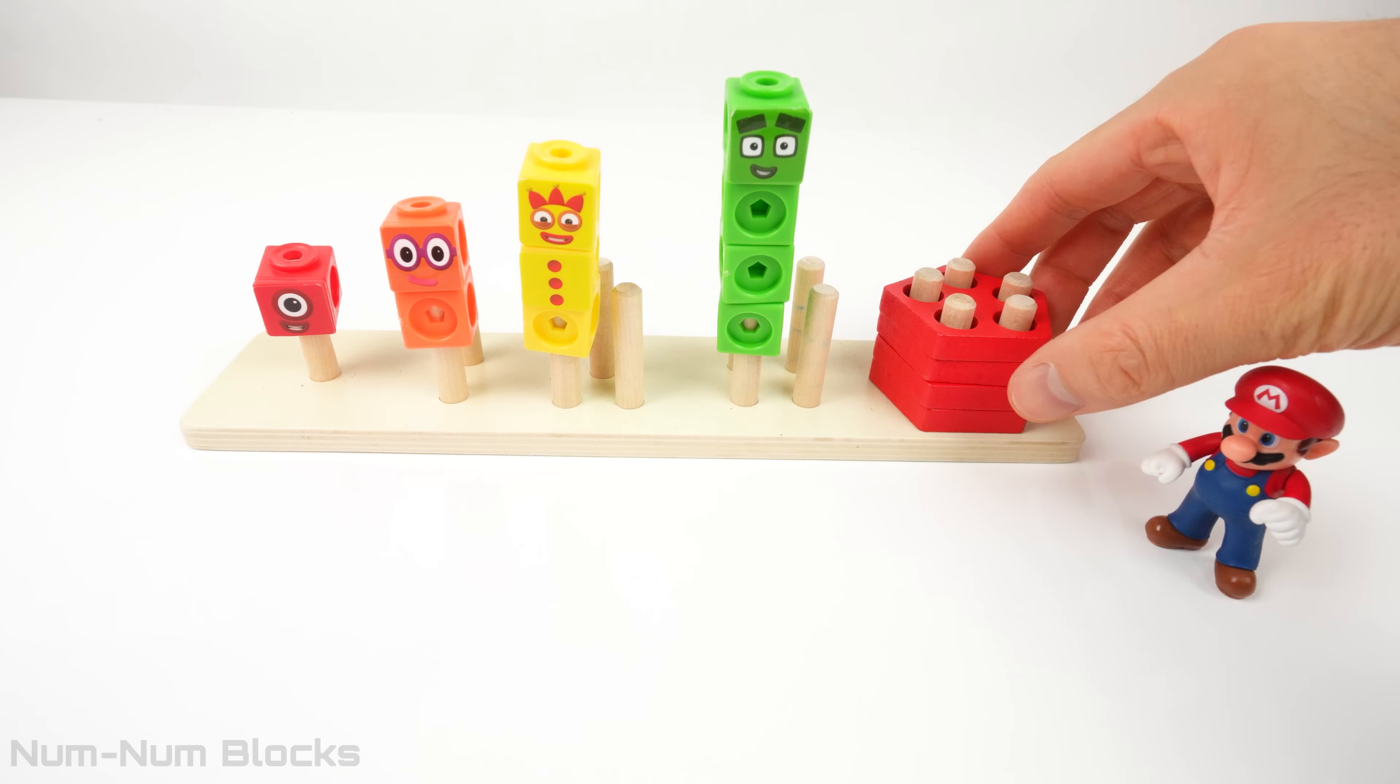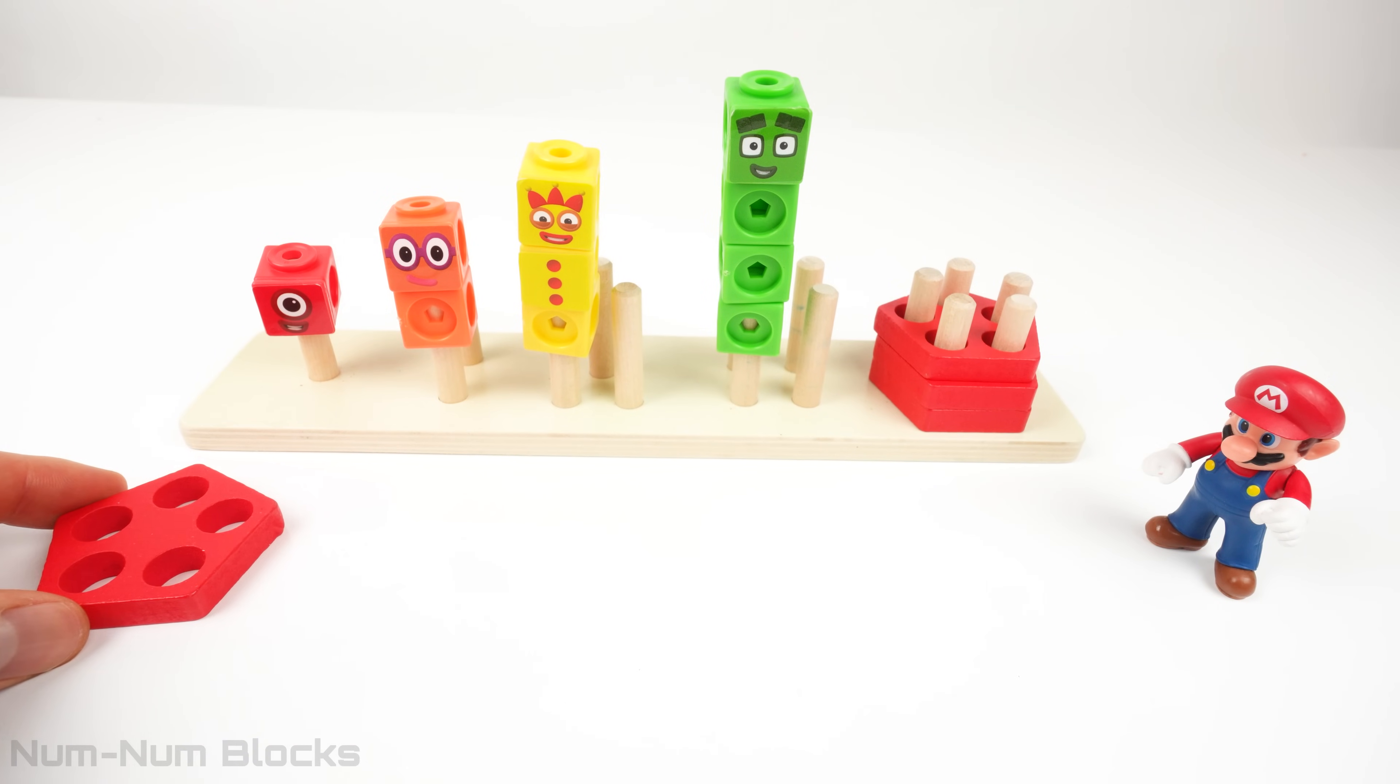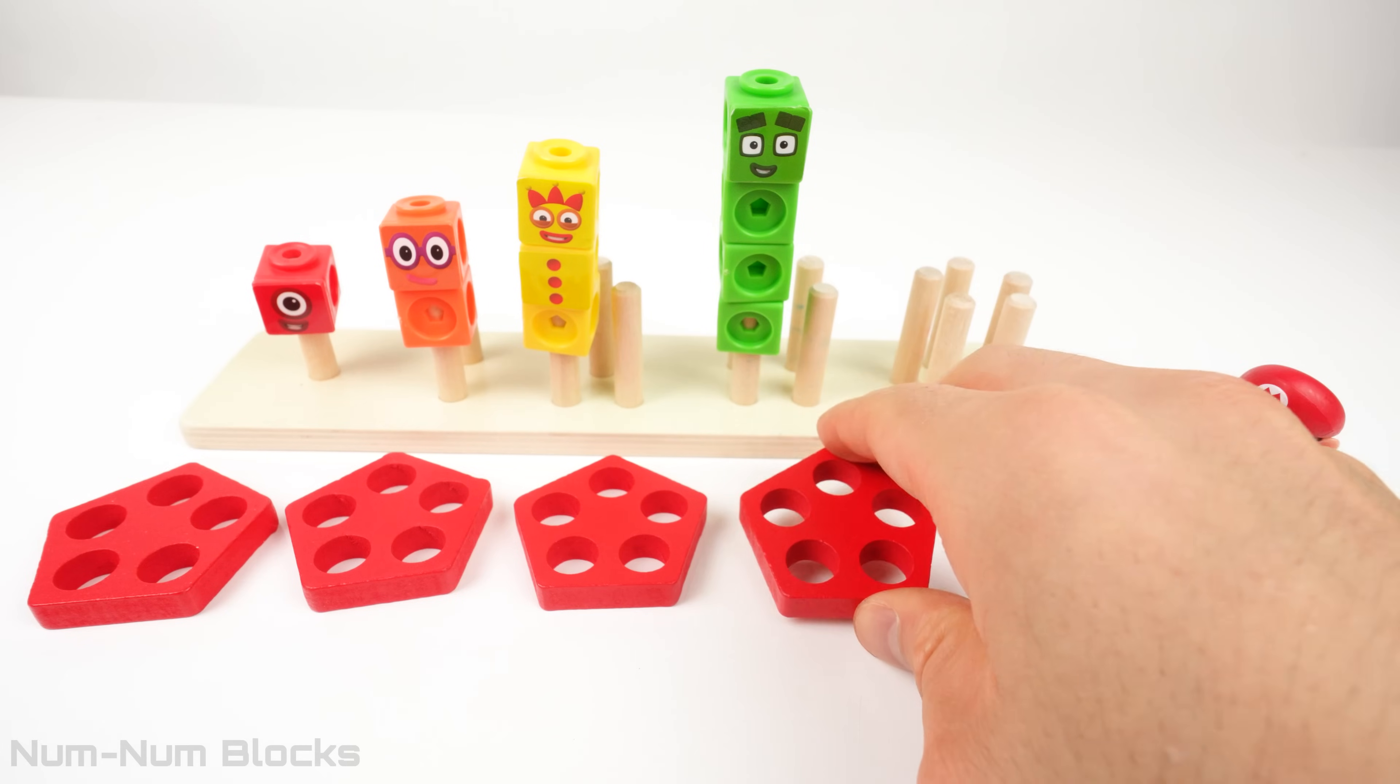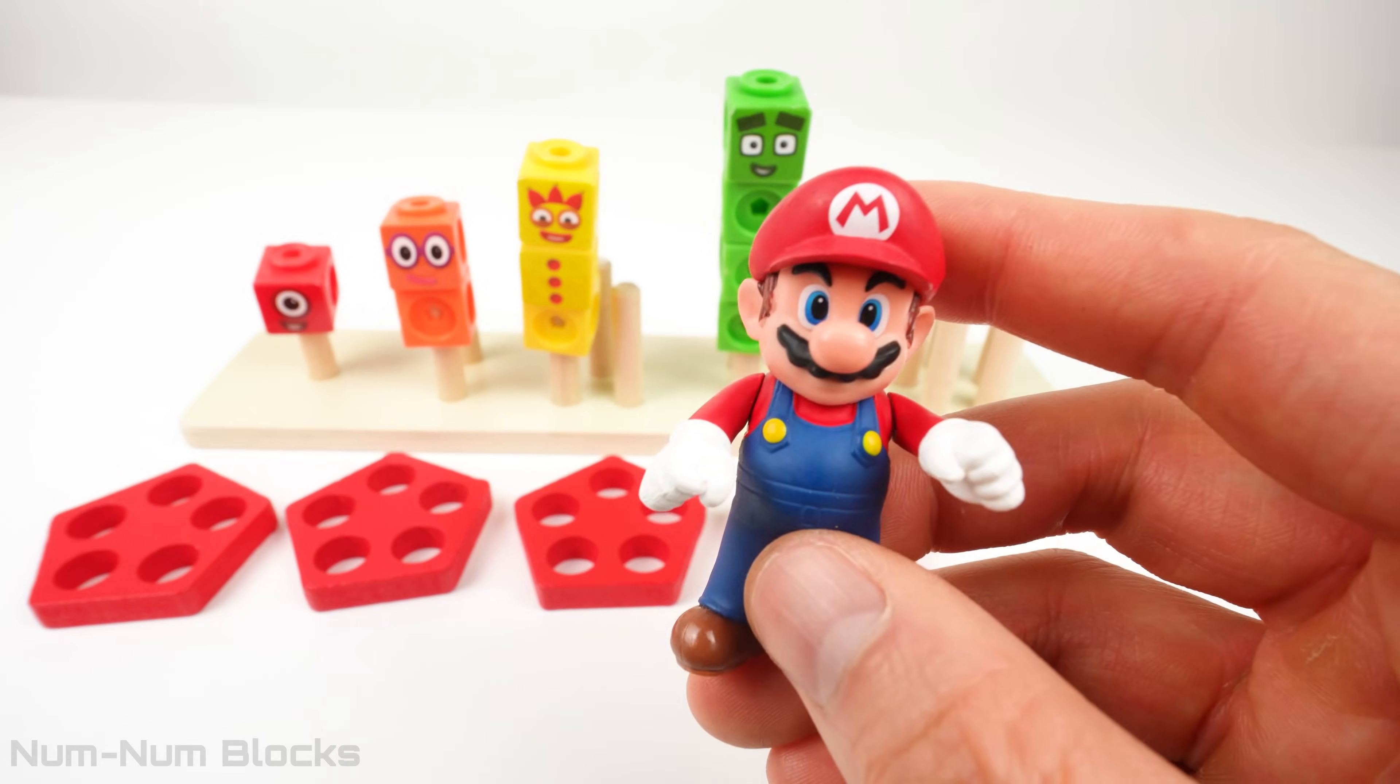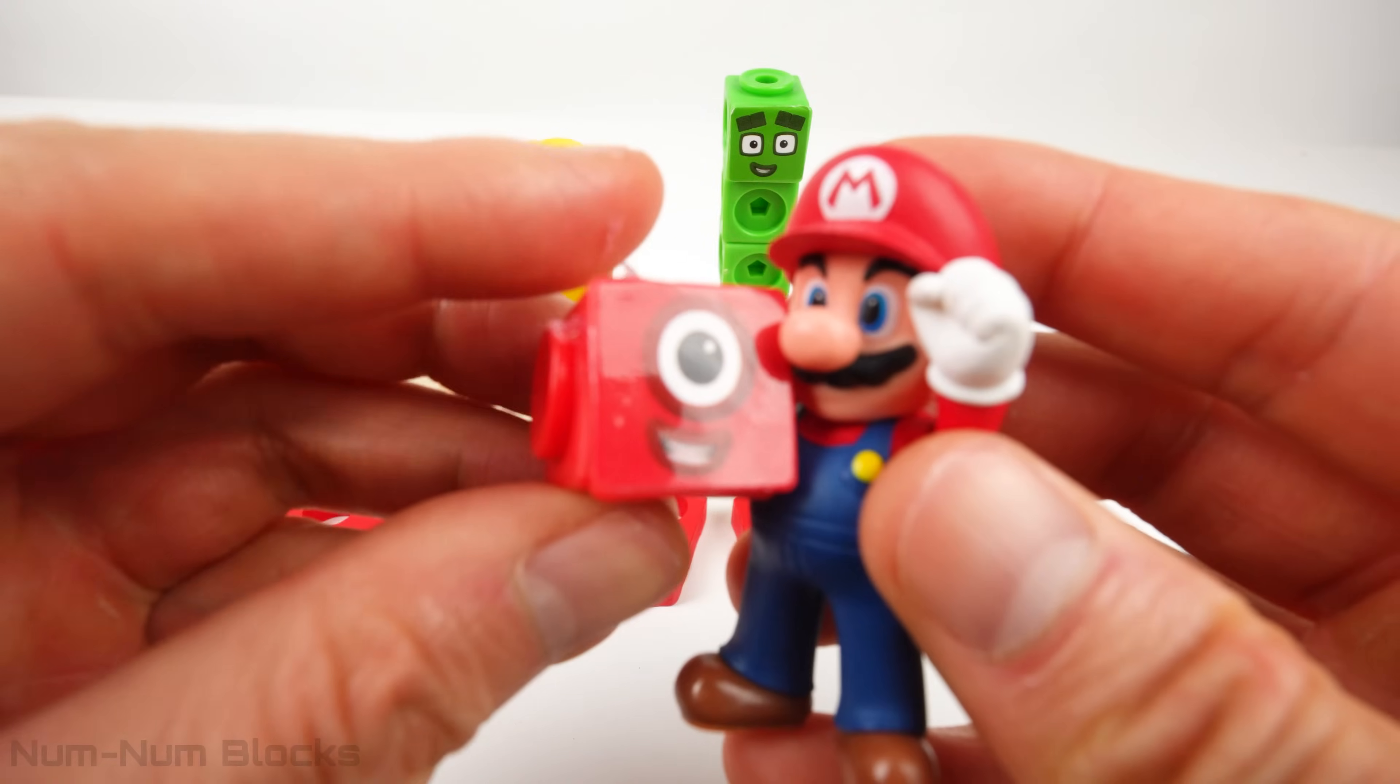The last piece is the pentagon with five holes. Let's count them. One. Two. Three. Four. Hmm. We need five pentagons. What do we do? That's right, Mario. We add one more.